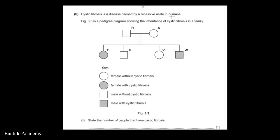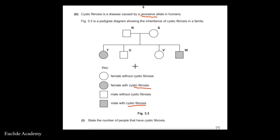Cystic fibrosis is a disease caused by a recessive allele in humans, meaning it only shows itself in a homozygous situation. Figure 3.3 is a pedigree diagram showing the inheritance of cystic fibrosis in a family. Parents R and S are shown with their offspring T, U, V, and W. Shaded individuals have cystic fibrosis; unshaded ones do not.